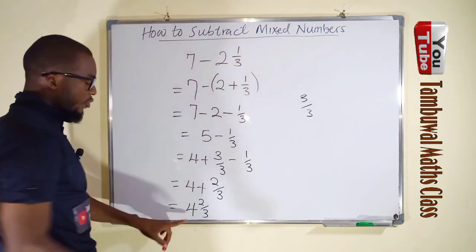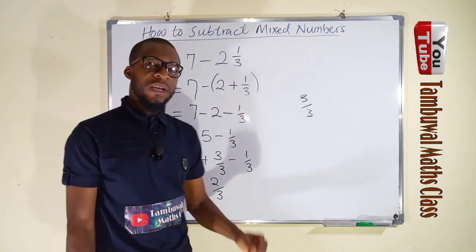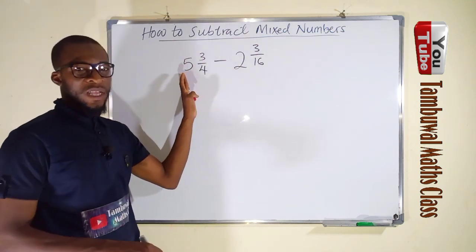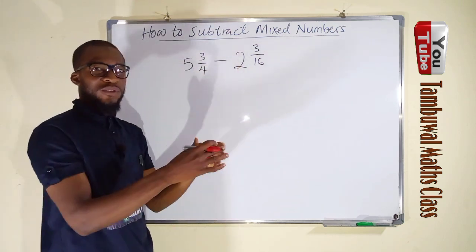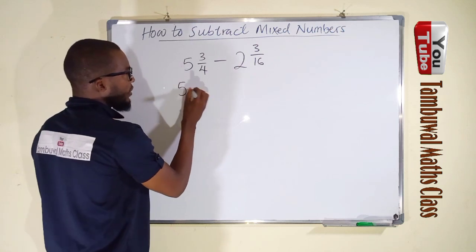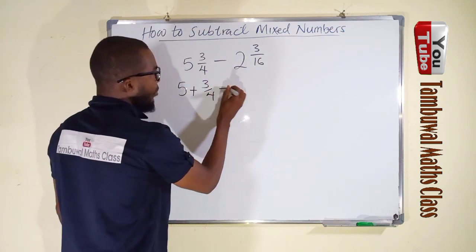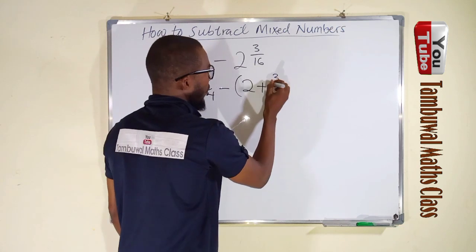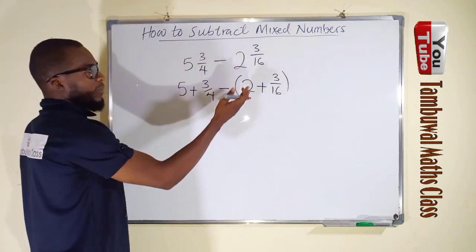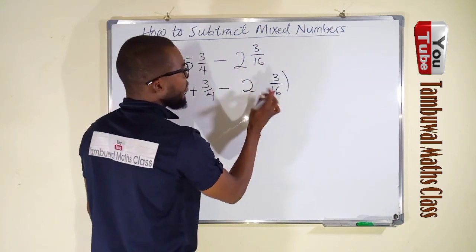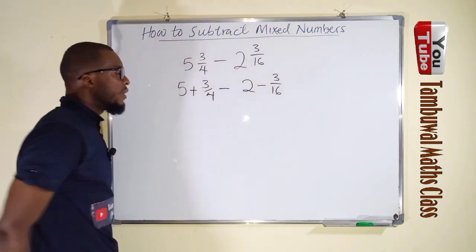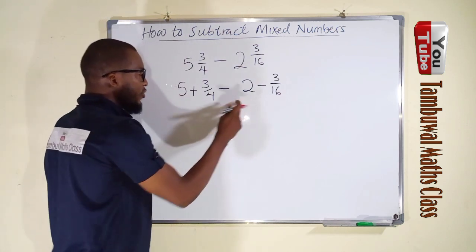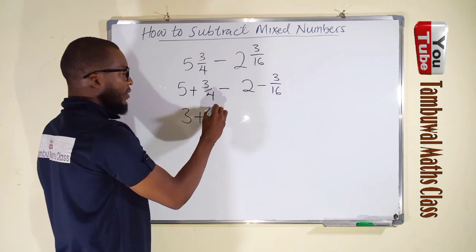Therefore, if you subtract 2 and 1/3 from 7, you obtain 4 and 2/3. Let us take another example. We want to subtract this from this. We rewrite each mixed number as a sum of its whole number and fraction: 5 plus 3/4, minus, and because this is a bundle we use parentheses, (2 plus 3/16). When we expand, everything inside becomes negative.